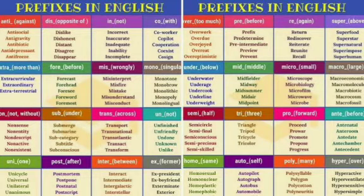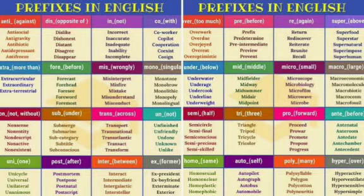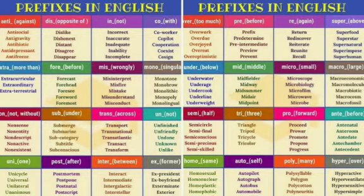Likewise, 'girl' becomes 'girlish' — the suffix '-ish' is placed after 'girl' to form the adjective form of the word.